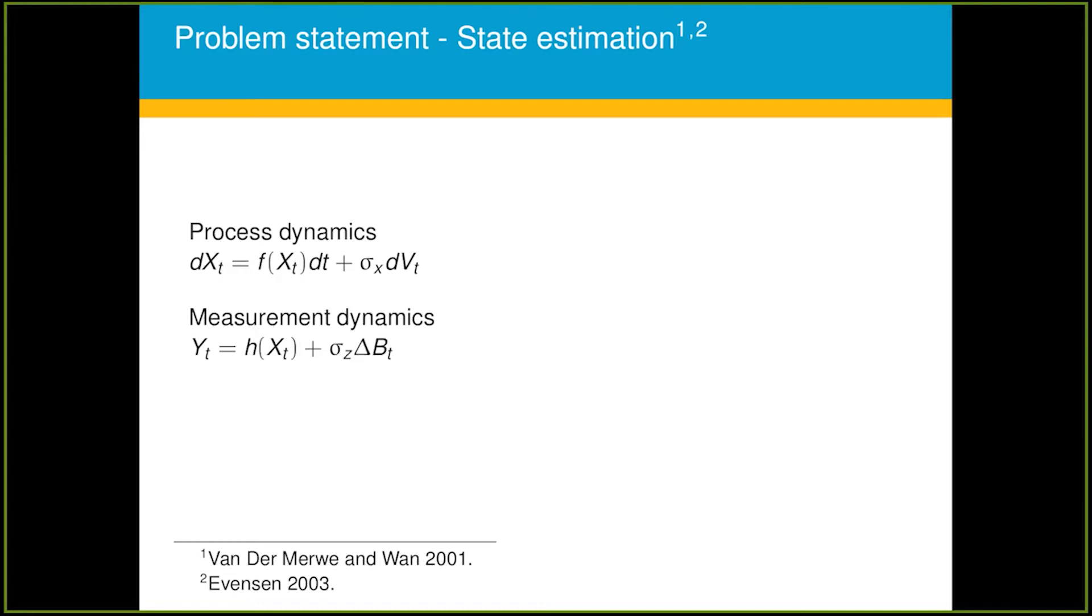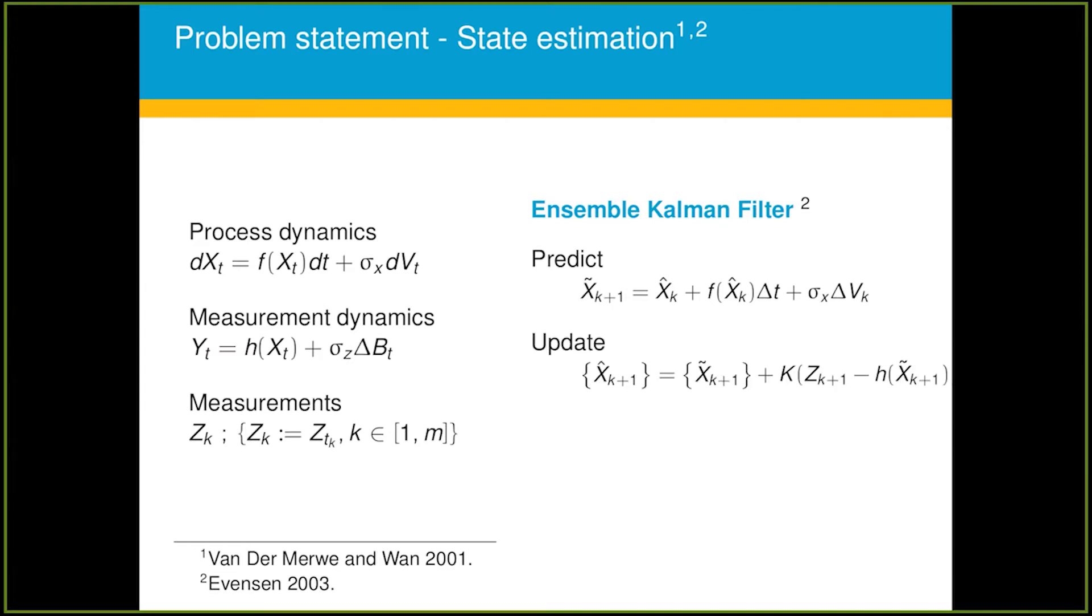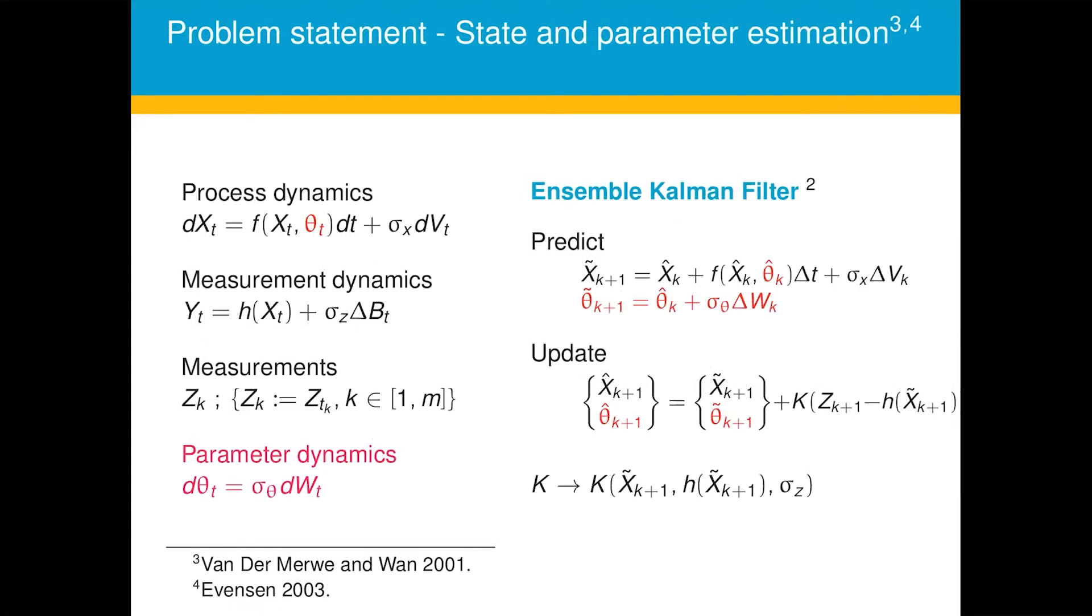The usual ensemble Kalman filter takes the states and evolves it, predicts it according to the evolution path of the model, and it updates it using a Kalman gain. The Kalman gain can be corrected in the beginning or at each step wherever the assimilation is happening. What I mean by assimilation in this context is whenever the measurements are available I incorporate that into the system. If you can see here, the updated state x hat is pulled from the x tilde, which is a predicted state, in the direction of the Kalman gain. What is multiplied to the Kalman gain is in some form the error at the sensor locations. So the sensor location error is pushed by the Kalman gain and it pulls the entire system to a state which hopefully is the correct state.